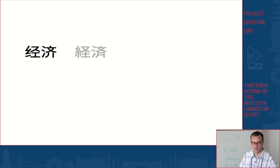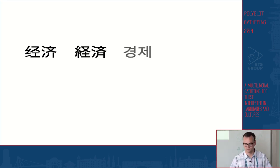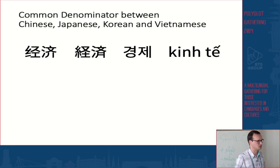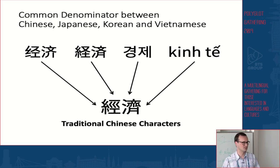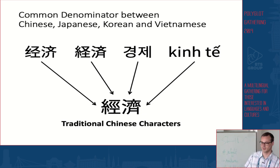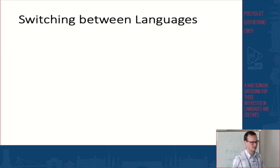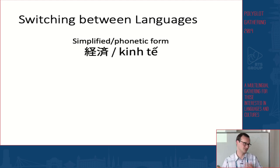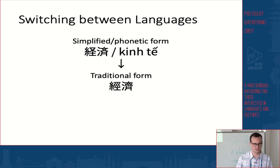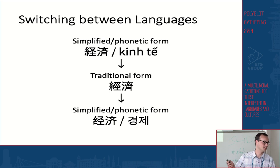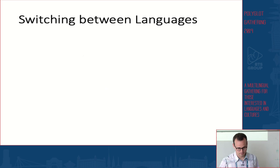So if you look at the simplified Chinese form, simplified Japanese form, phonetic Korean form, and phonetic Vietnamese form, what common denominator could you use? It's very simple — you can revert to the traditional Chinese character form. Based on this principle, you can implement a language switching mechanism: take one simplified or phonetic form, convert it to traditional Chinese characters, then reconvert it to another simplified or phonetic form. This way you can switch between Chinese, Korean, Vietnamese, Japanese, and so on.